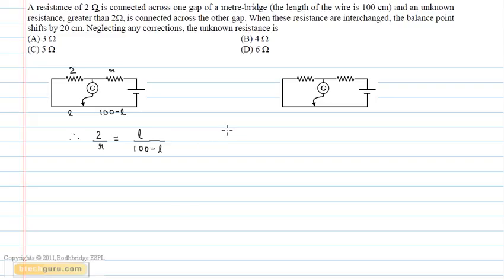In the second case, when both the resistors are interchanged, the length of the balance point shifts by 20 cm. As the greater resistance is now on the left-hand side, the balance point is shifted towards the right-hand side. Therefore, the length of the wire across the first resistor is L plus 20 and the length of the wire across the second resistor is 80-L.